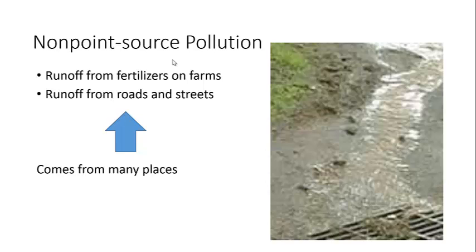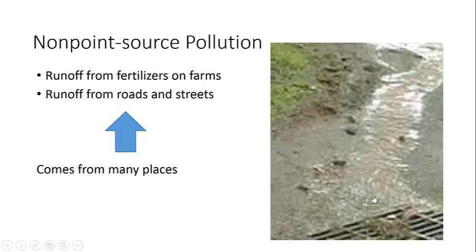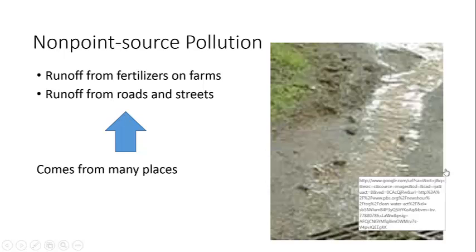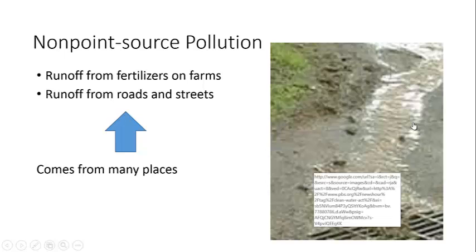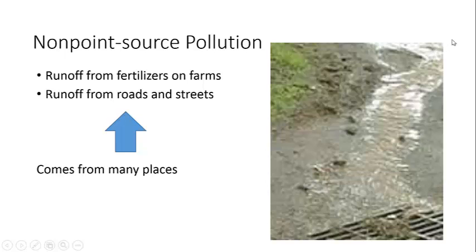Non-point source pollution is like what you see here. It's runoff that comes from fertilizers on farms, or, as you can see, usually when it rains and you're walking down the street and you see streams of water coming into the drain in the street — that's non-point source pollution. It comes from many places. As that water seeps down and runs into the drain, it's picking up pollution from here, from here, from here, and from many other places. So because it's pollution from many places, it's non-point source pollution.